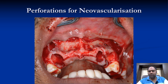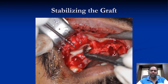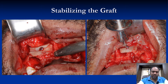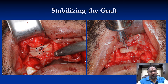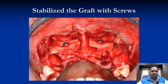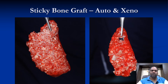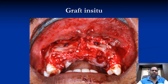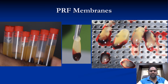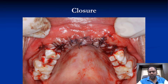We stabilized the graft. There is one mistake I made here — I over-tightened a screw, so that split plate also fractured, but it was still holding well. We then placed the sticky bone graft prepared from IPRF. After placing the graft, we kept some PRF membranes and then did the closure.